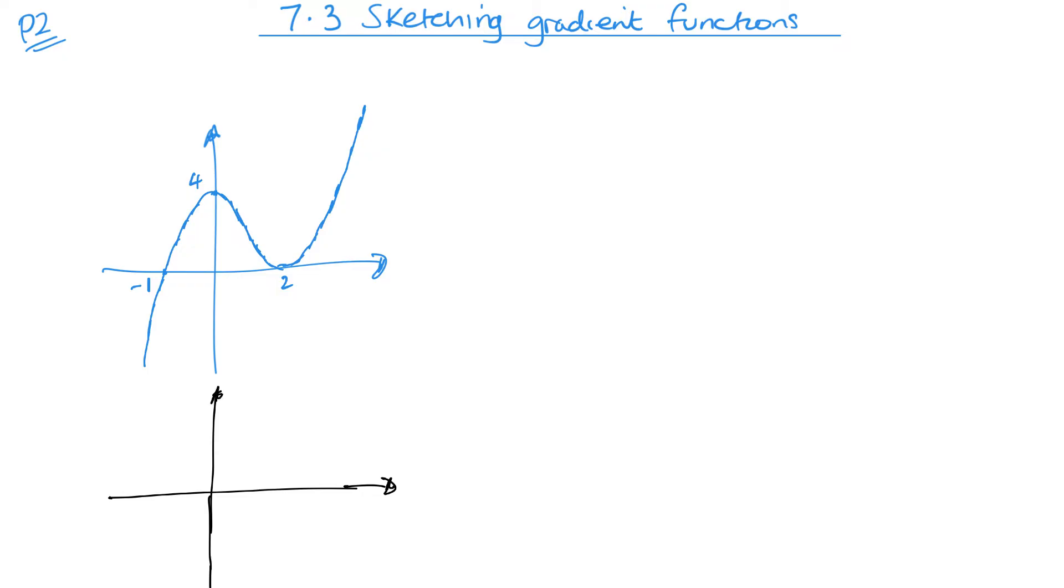It's crossing there at 4 and that is a maximum value there. It's touching the axis at 2 which is one of its local minimums and then it's crossing here at negative 1. Now at a minimum or maximum point, the gradient is 0. These two gradients here is 0. That means for my gradient function is going to hit the axis because it's going to be the value 0.